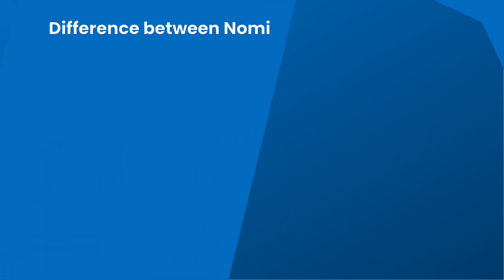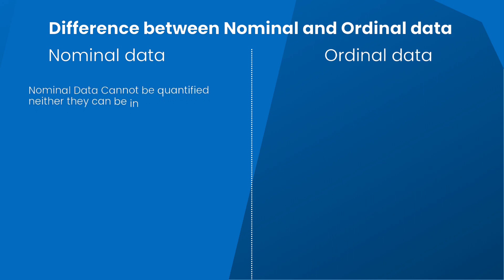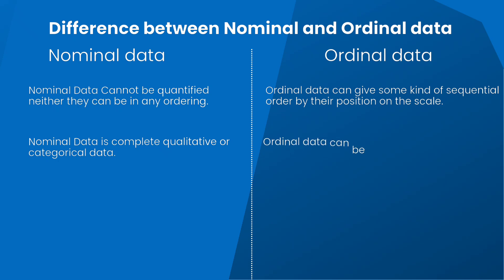Now let's see the difference between nominal and ordinal data. Nominal data cannot be quantified, neither can it have any ordering, whereas ordinal data can give some kind of sequential order by their position on a scale. Nominal data is completely qualitative or categorical, while ordinal data can be found between qualitative and quantitative data.